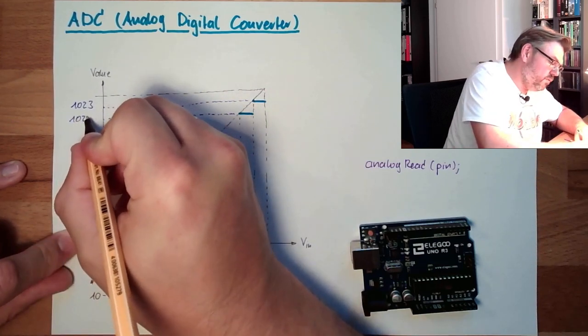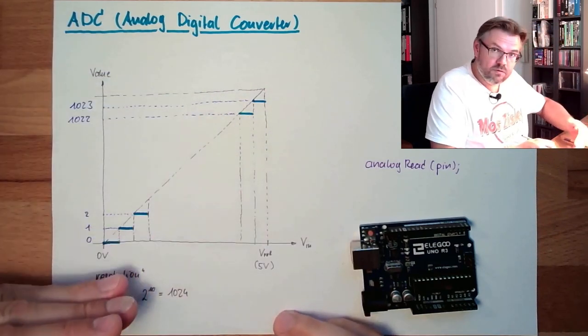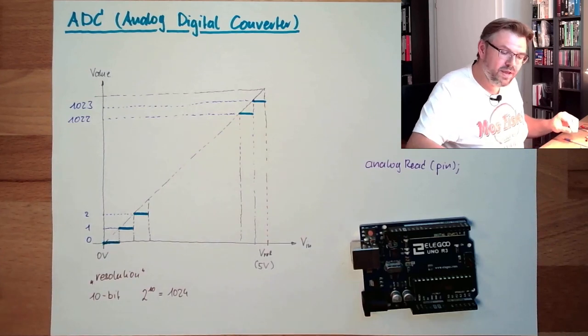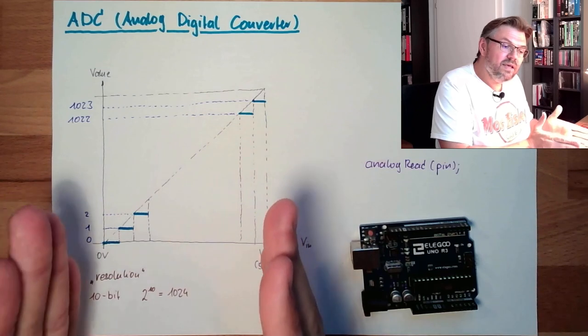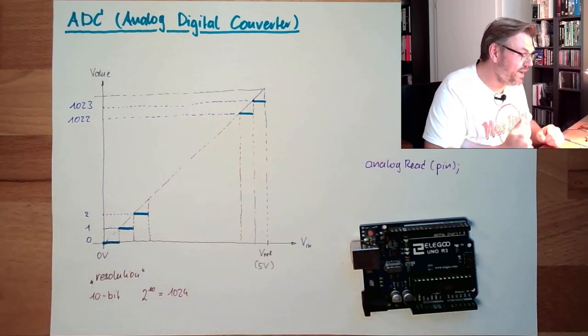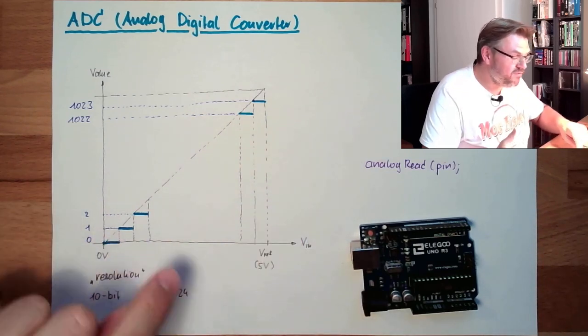This is 1022. And we are going down. So we are dividing these 5 volts into 1024 different classes.